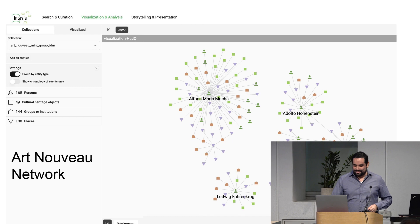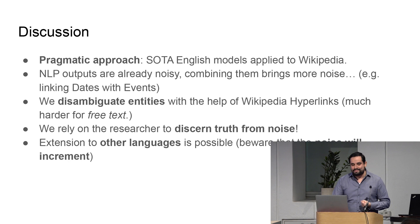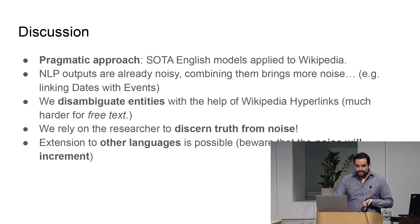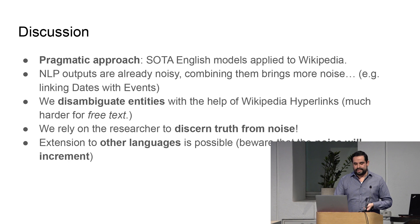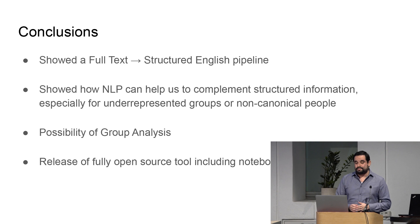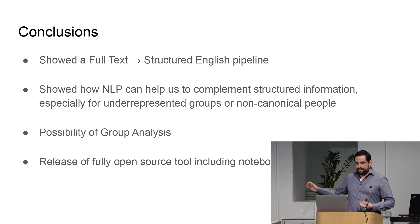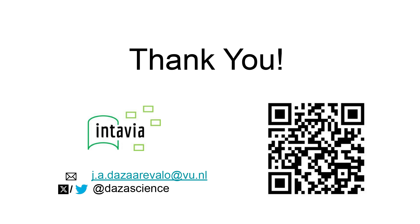To jump into conclusions: this was a very pragmatic approach but there are things to take into account. NLP outputs are noisy, so we have to remember this. The researcher is still the most important person in this pipeline — you as a researcher are the one who decides if something is true or noise, but this already gives you some help. Extension to other languages is possible. This is a full text-to-structured-data English pipeline. We showed how NLP can help get more information, especially for underrepresented groups or non-canonical people, and the possibility of group analysis. This is an open source tool including notebooks and everything to get started — just go to the link. Contact me on Twitter or by email. Thank you.